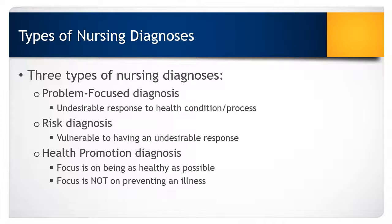There are three types of nursing diagnoses. The first is called the problem-focused diagnosis, where the client demonstrates an undesirable response to a health condition or process. A risk diagnosis is made when the nurse determines that the client is vulnerable to developing a problem-focused diagnosis. The third type is the health promotion diagnosis, made when the client exhibits behaviors that show a readiness to enhance certain behaviors that will increase his or her well-being. The health promotion diagnosis is the only diagnosis focused not on prevention of illness, but rather on enhancing health.